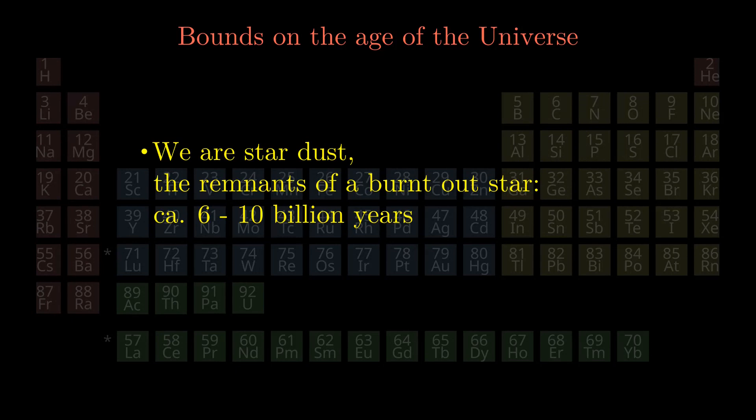All the chemical elements we find on earth today were produced by nuclear reactions inside a star and only were released after its supernova explosion. The lifetime of a star is at least a few billion years.